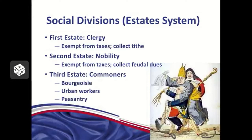You might be well-educated and well-off, but you couldn't hold certain positions in government or in the military because you weren't part of the nobility. Some of the upper third estate actually had more money than some people in the nobility, but the nobility didn't have to pay taxes while the bourgeoisie did. What made you a nobleman versus just a rich, well-educated person? Birth. That's it. What family were you born into — that was really the only thing that divided you.